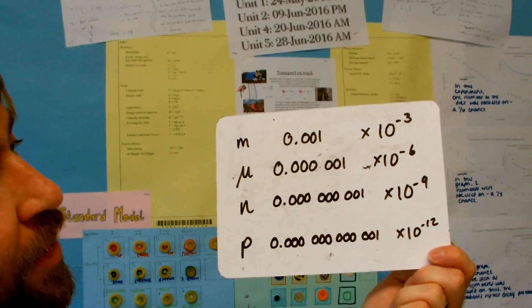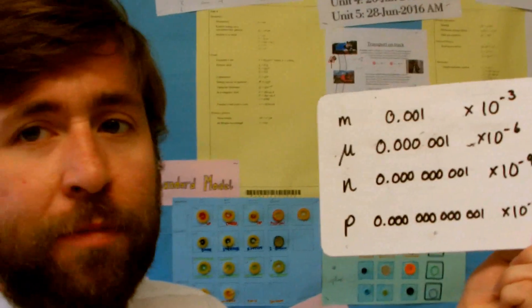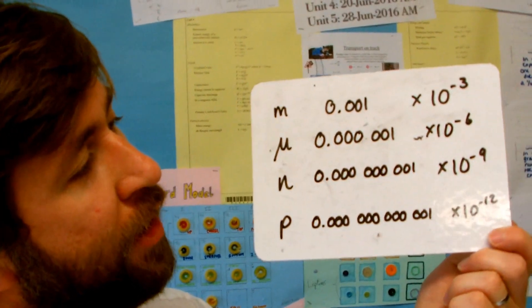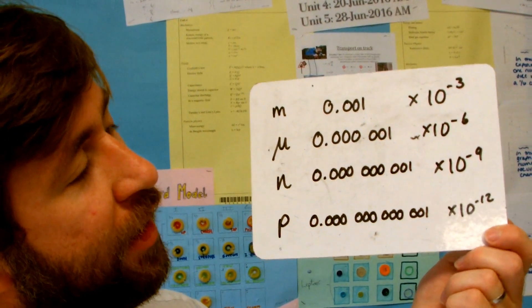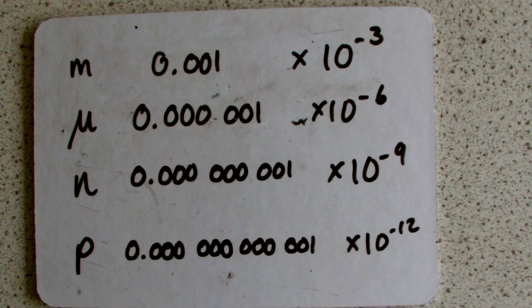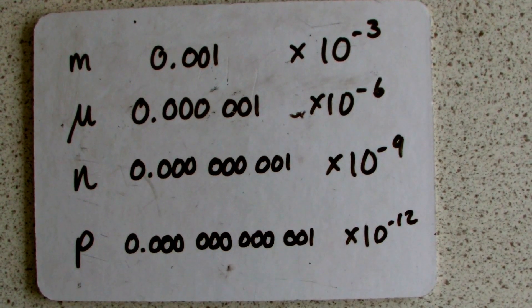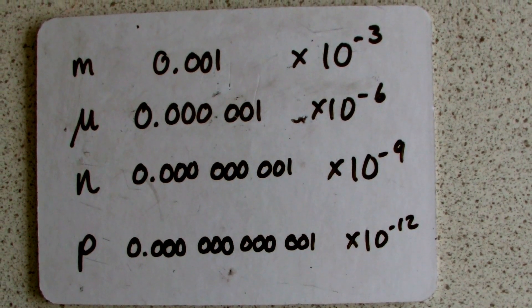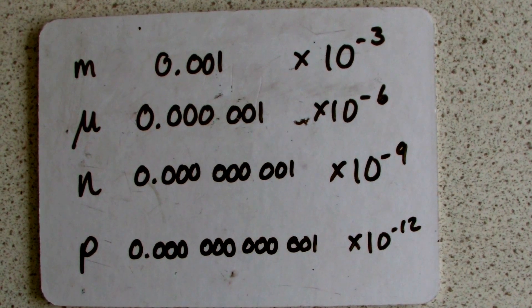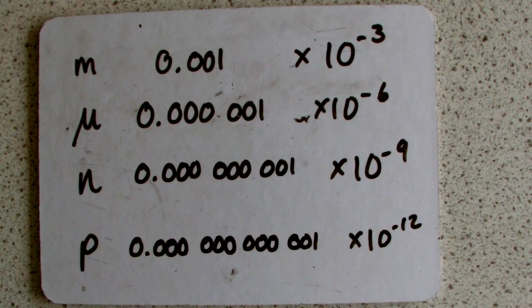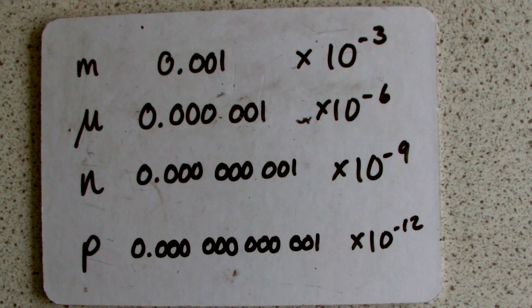On the flip side, getting smaller: milli is a thousandth, times ten to the minus three. Micro is a millionth, times ten to the minus six. Nano is a billionth, times ten to the minus nine. And pico is a trillionth, times ten to the minus twelve — and you can see that's twelve zeros before the one there.